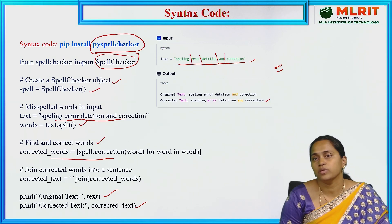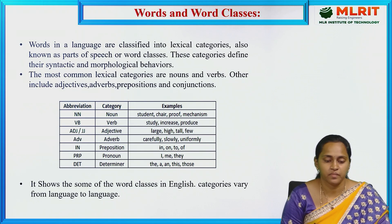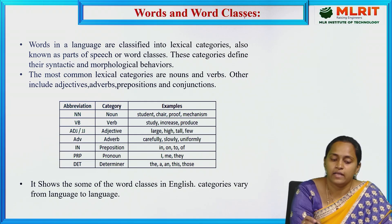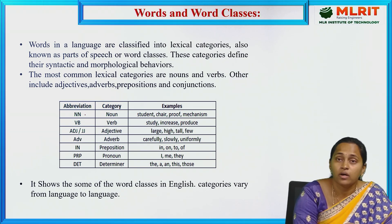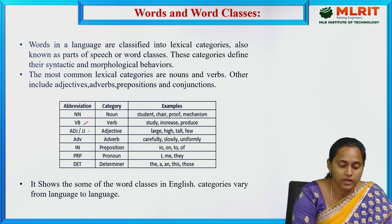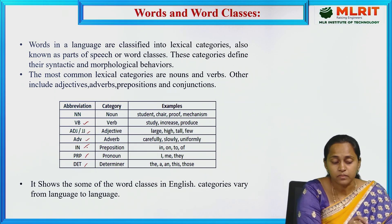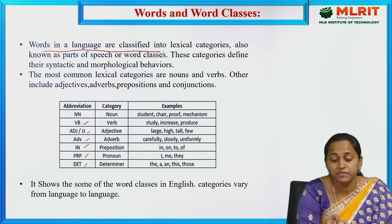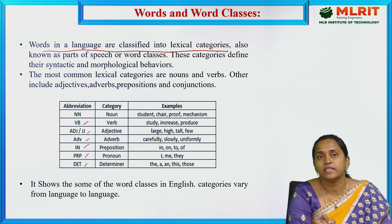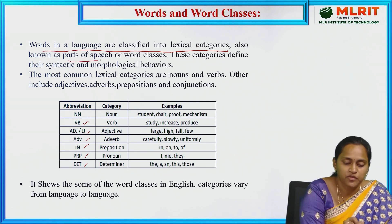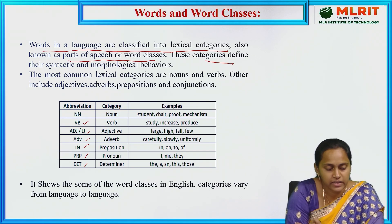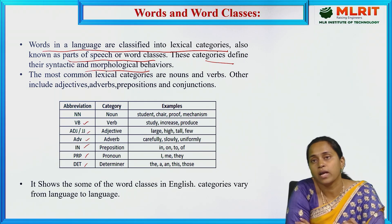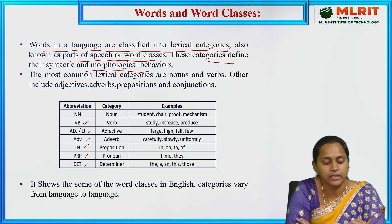That covers spelling error detection and correction. The last topic is word level analysis: words and word classes. Word classes include nouns, verbs, adjective phrases, adverbs, and prepositions. Words in a language are classified into lexical categories — also known as parts of speech, or word classes, sometimes abbreviated as POS.